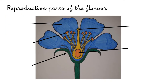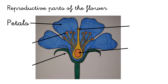The first thing that we have to know is the parts of the flower. The first one is petals. Petals have to be very colorful to attract insects to the flower. Then we've got the sepals, which are the green leaves that protect the flower.